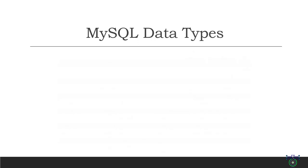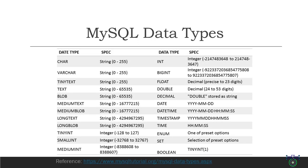The storage size of the integer data type depends on the range of values it can represent. The tiny int data type can store values from -128 to 127 and takes up one byte of storage. The small int data type can store values from -32,768 to 32,767 and takes up two bytes of storage. The medium int data type can store values from -8,388,608 to 8,388,607 and takes up three bytes of storage.